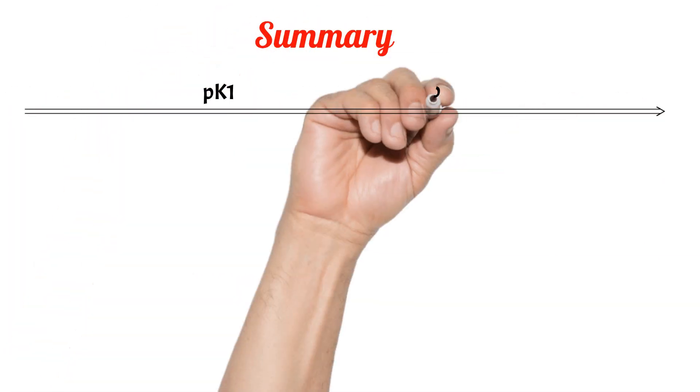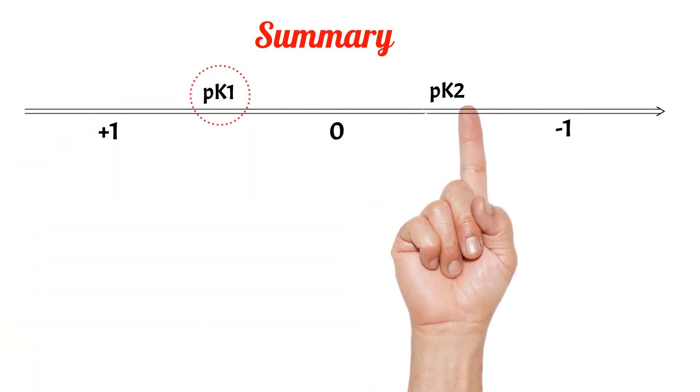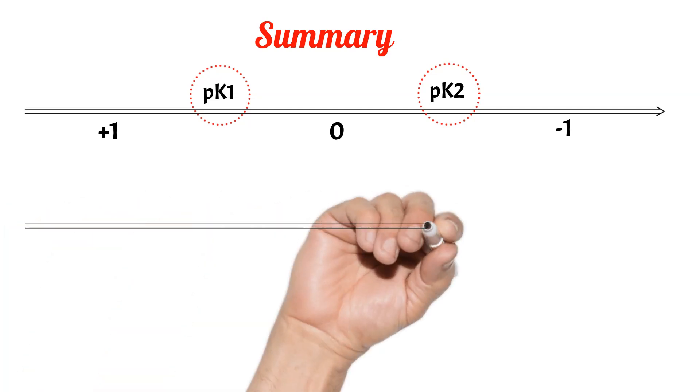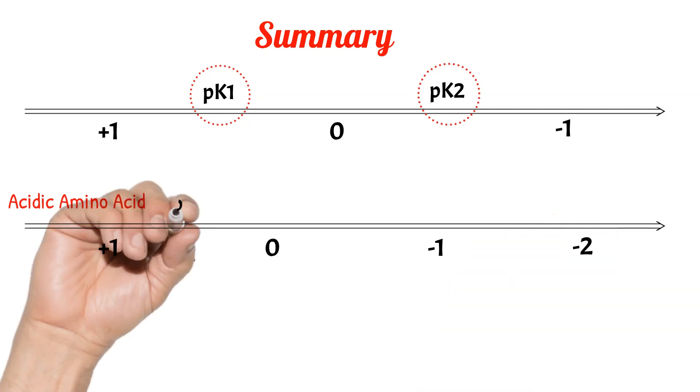In summary, the charges of an amino acid or a peptide change by changing the pH. For an acidic amino acid, the charges change from plus one at low pH to minus two at high pH.